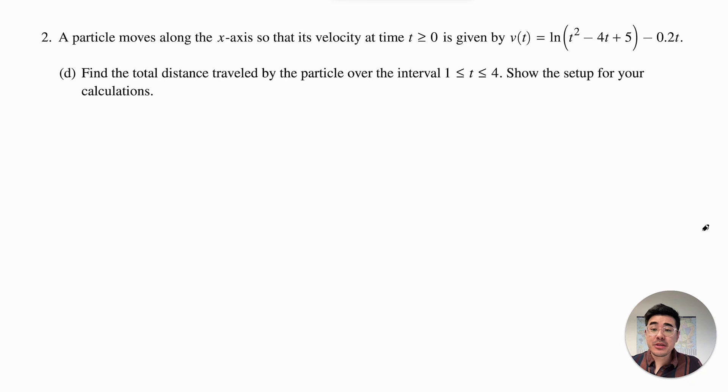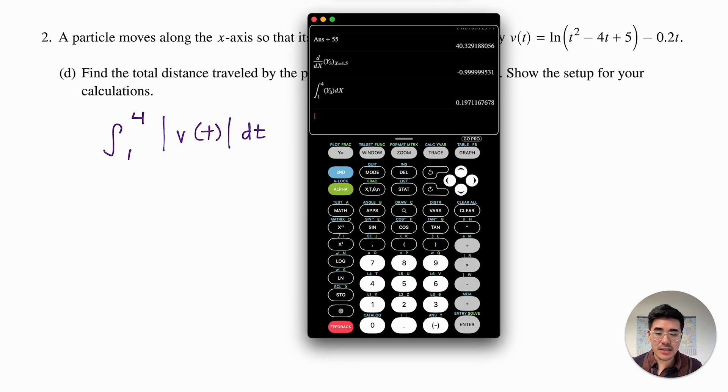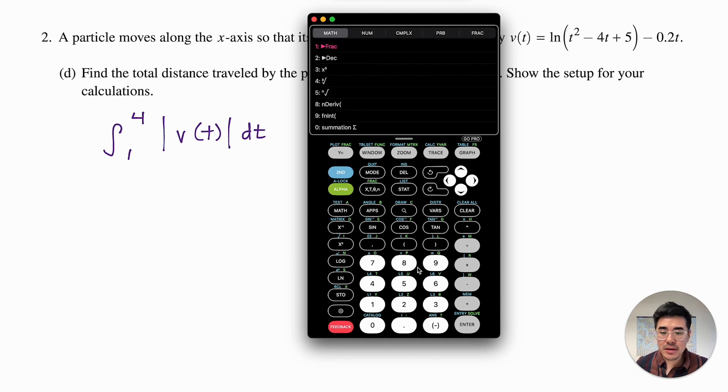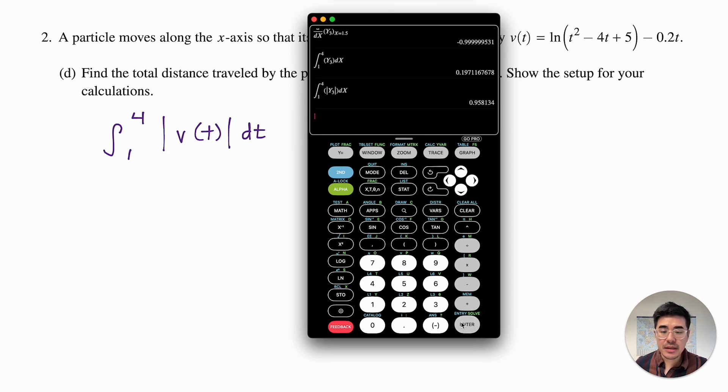Part D says find the total distance traveled by the particle from 1 to 4 and show the setup for your calculation. So like I said in the previous question, if you just integrated from 1 to 4 of v of t dt, that would only give you the displacement. To find the total distance, we want to take the integral of the absolute value of velocity. So then we go to math calculator integral, and then from 1 to 4, and then we go back to math and we plug in abs for absolute value of y of 3. And then we get our total distance traveled is 0.958.